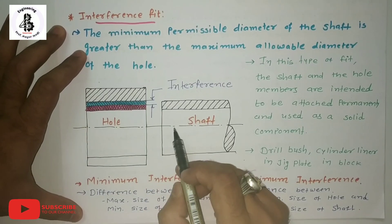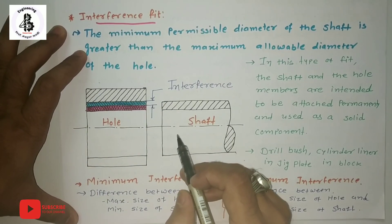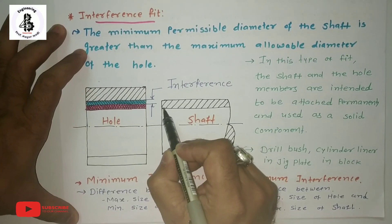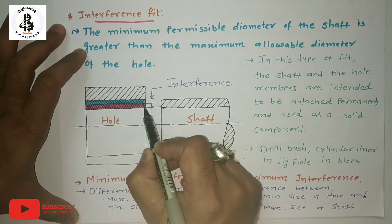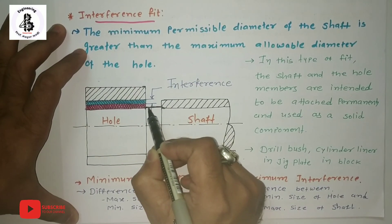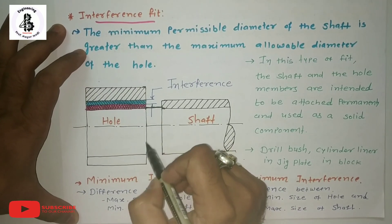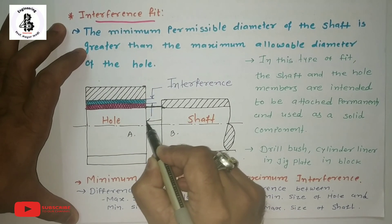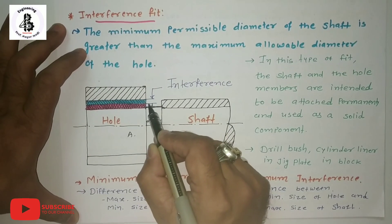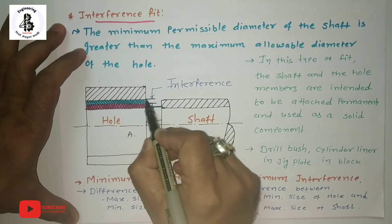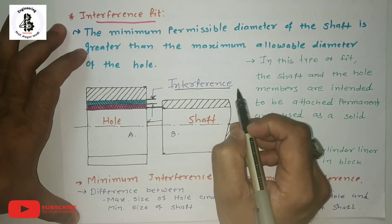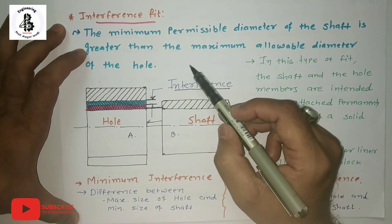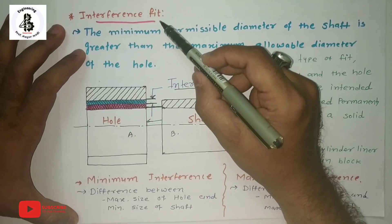So, the minimum permissible diameter of the shaft is greater than the maximum allowable diameter of the hole. When assembling the two systems A and B, this provides some interference. This distance is called an interference fit. Once again, the minimum permissible diameter of the shaft is greater than the maximum allowable diameter of the hole — that is called an interference fit.